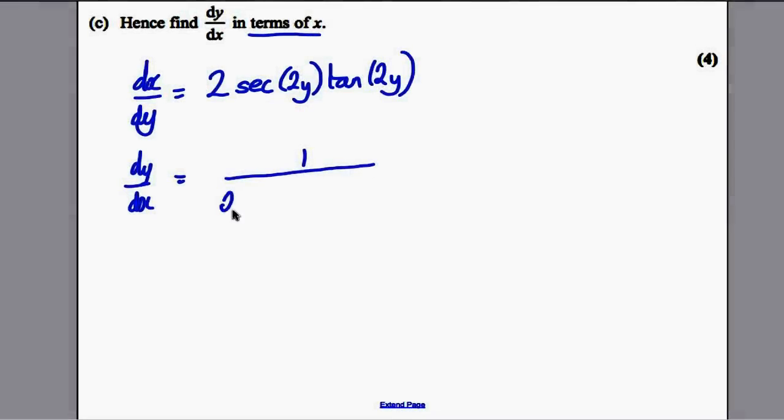So the first mark out of the four would be to simply invert this. dy by dx is therefore 1 over 2 sec 2y tan 2y. That would get you a mark.